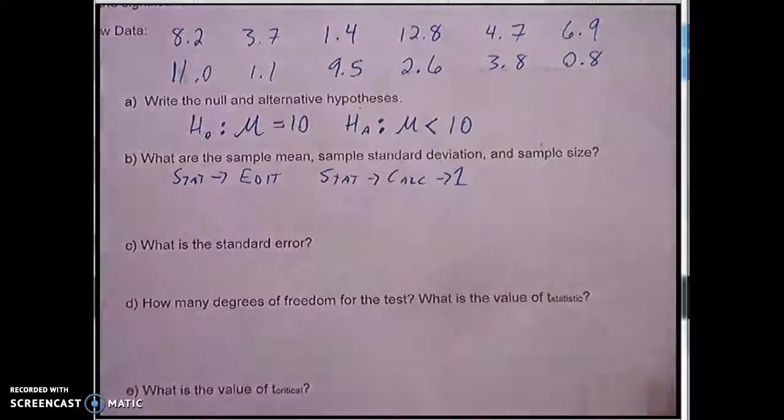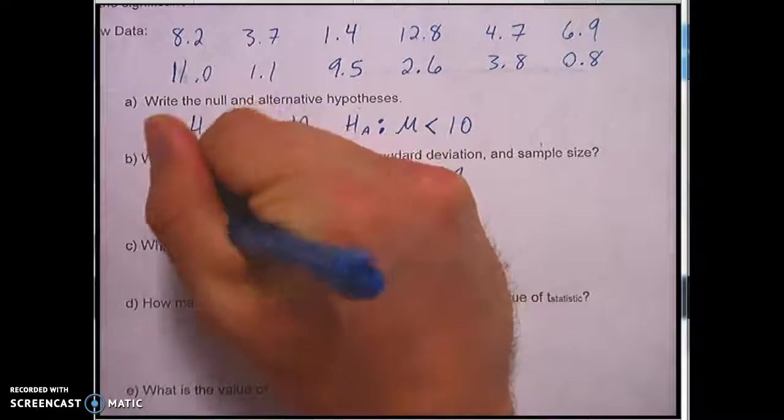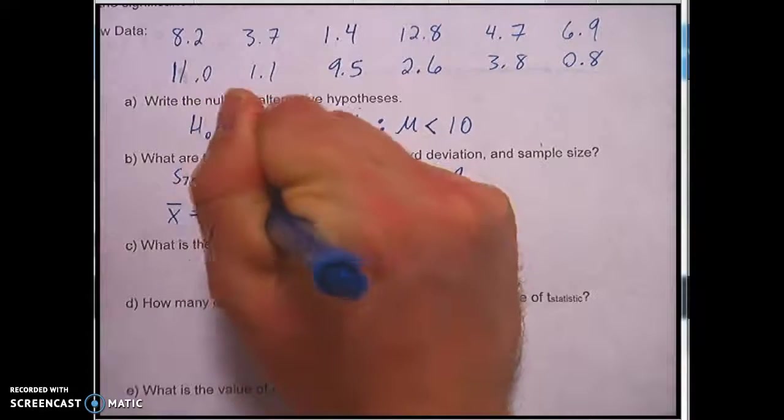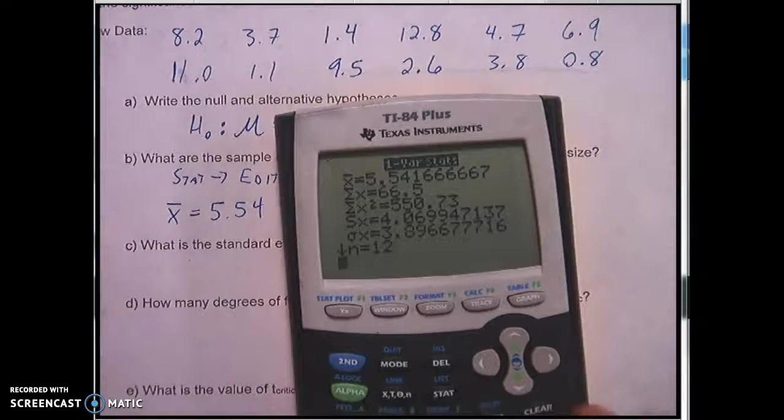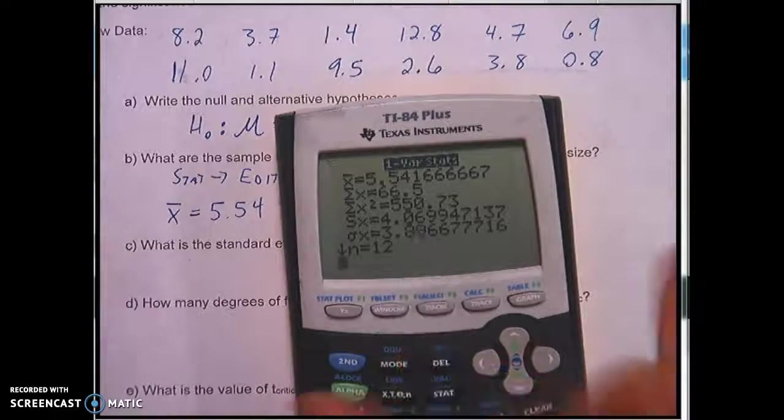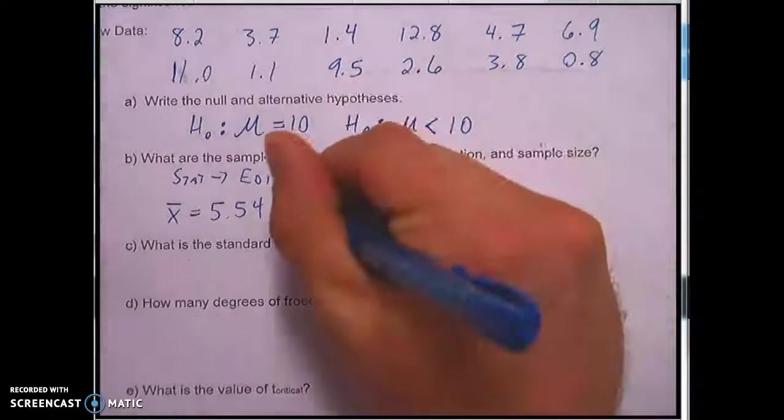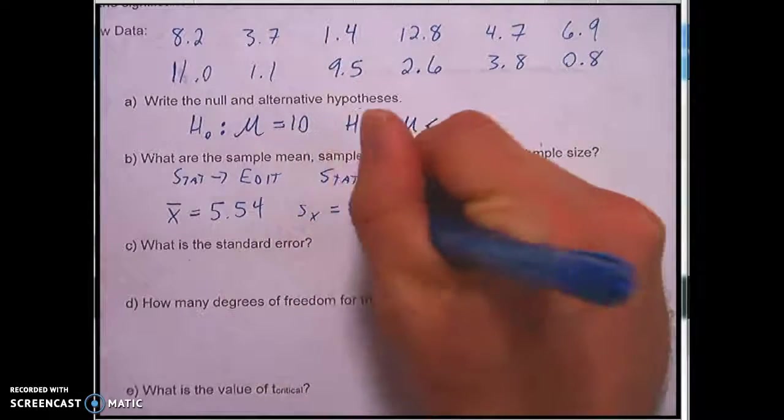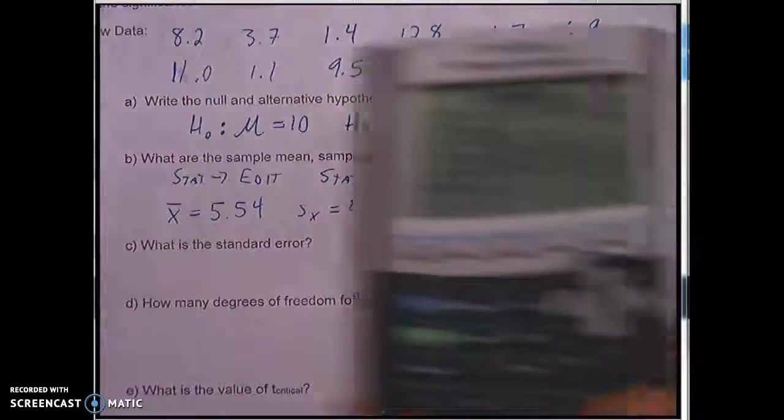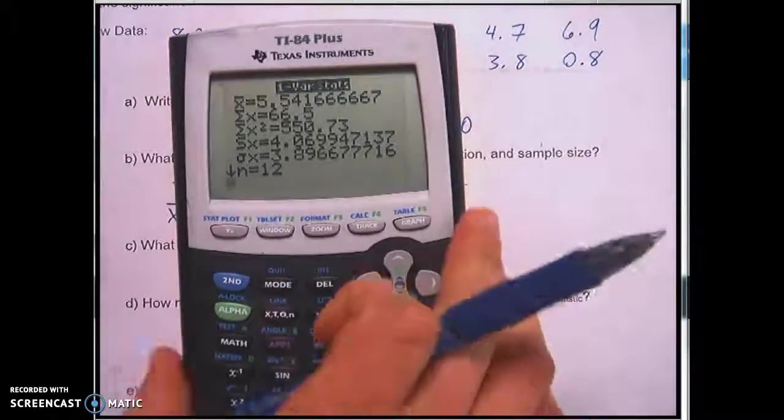And I'm going to do stat calc 1 and I've got the sample mean right here x bar is 5.54, the sample standard deviation is s sub x 4.07 and then finally the sample size is n which is 12.